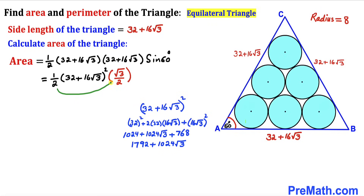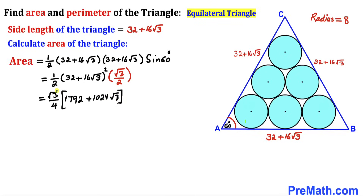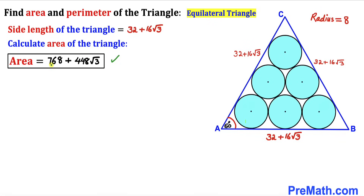Multiplying (√3/2) × (1/2) gives a factor of √3/4. Then: Area = (√3/4) × (1792 + 1024√3). Distributing: (√3 × 1792)/4 = 448√3, and (√3 × √3 × 1024)/4 = 3 × 1024/4 = 768. So the area of triangle ABC = 768 + 448√3 square units.